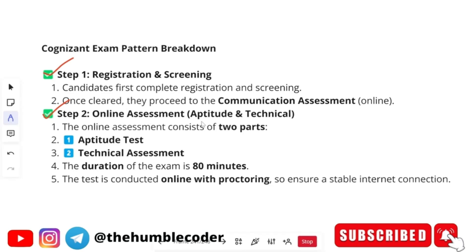Step two is your aptitude and technical assessment. The online assessment consists of two parts — aptitude and technical — and the duration of the examination is 80 minutes. That is 80 minutes for your aptitude test, because right now you are going to have your aptitude test first. Don't consider that both are going to happen in the same round — there will be different rounds for both.